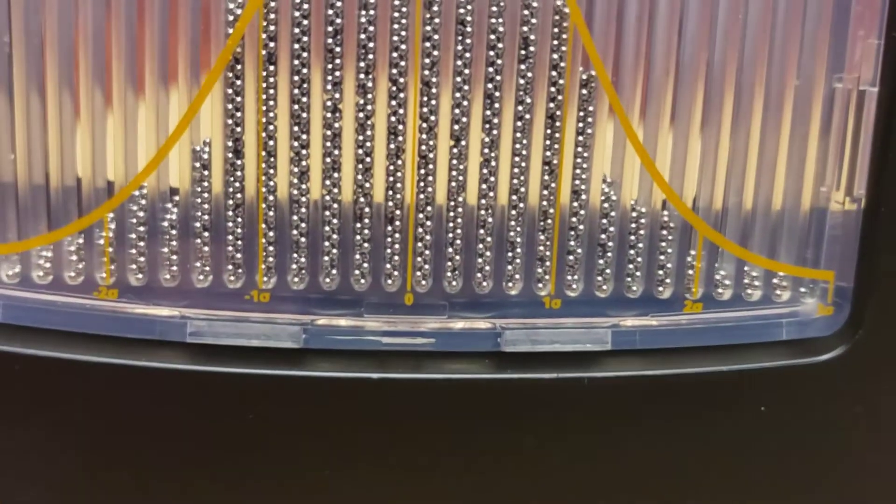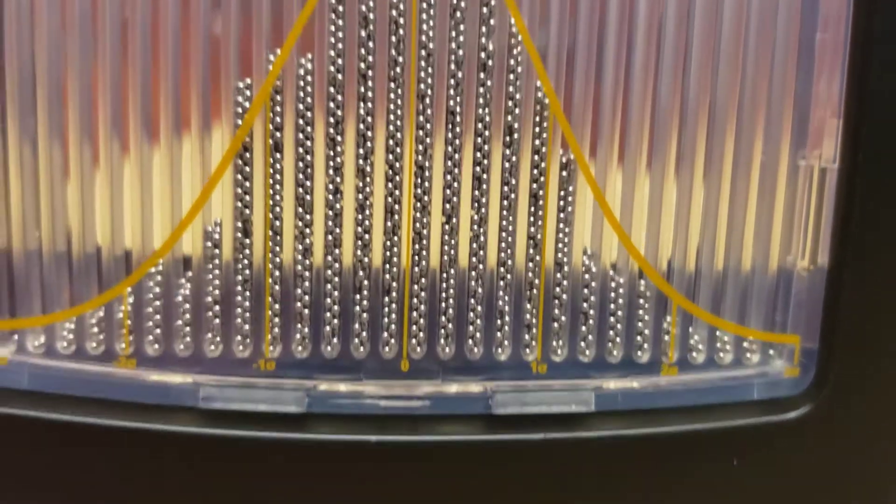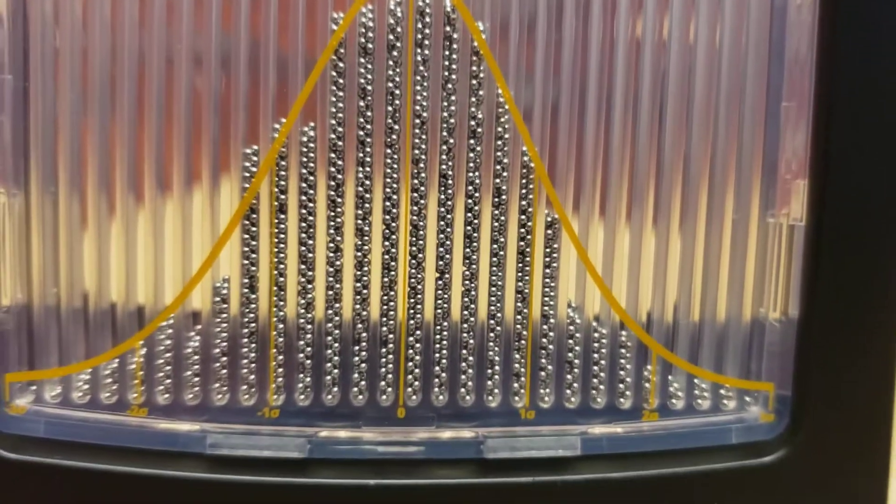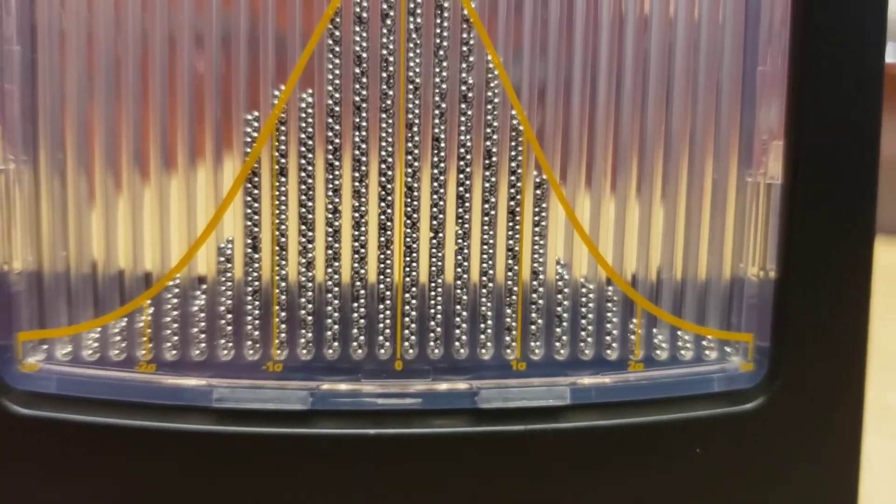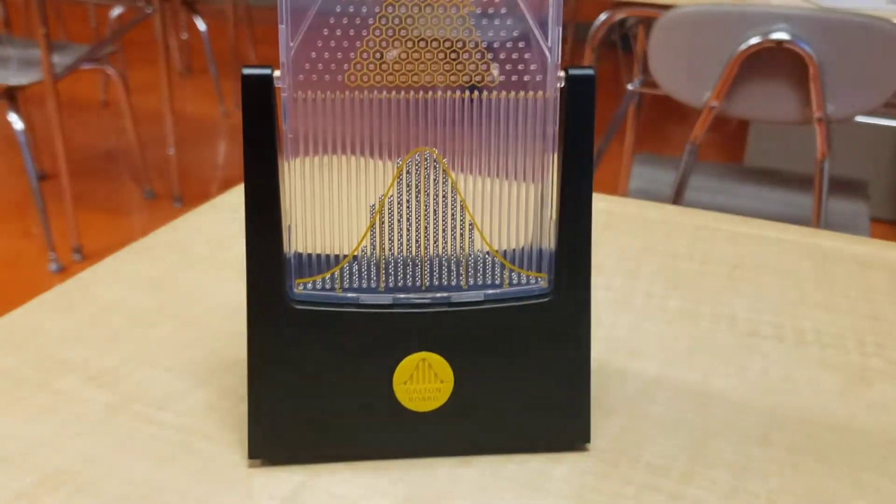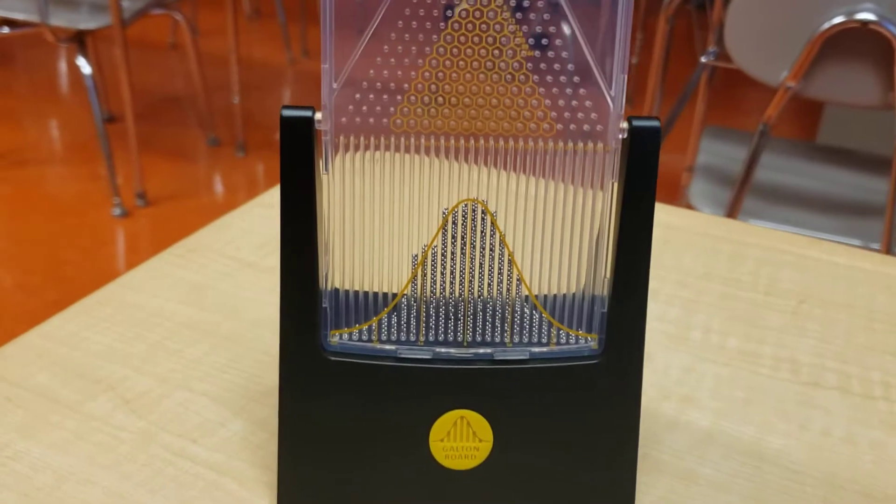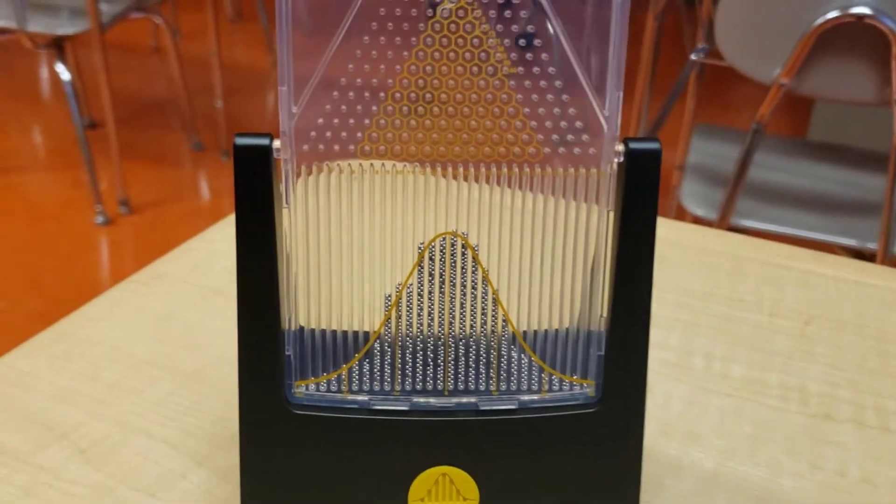And you'll notice that they even put the standard deviation lines on here. Right? So that's sort of a throwback to last section. Now, we're not learning about these normal distributions right now, but we are actually learning about binomial distributions.